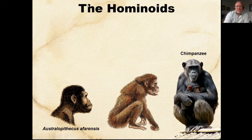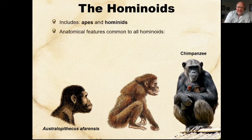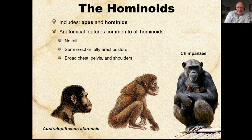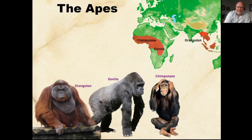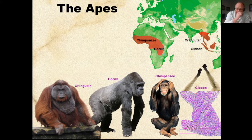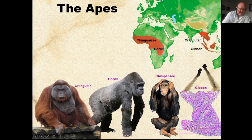Then we get to the hominoids. The hominoids include apes and hominids — they do not have tails, so never call an ape a monkey because it doesn't have a tail. Some of them are semi-erect or fully erect, with a broad chest and shoulders, relatively long arms, and mobile shoulder joints. Among the apes we have the gibbon, chimpanzee, gorillas, and the orangutan. There are only four ape species, and then the fifth — not really an ape but hominids — is us.